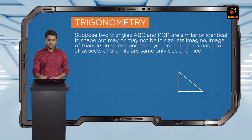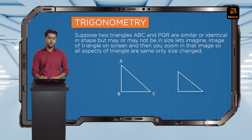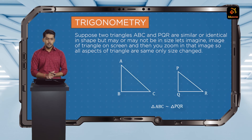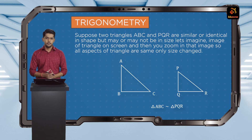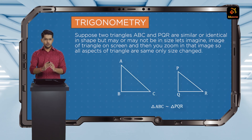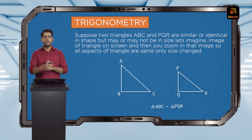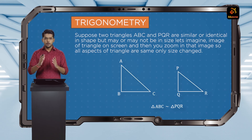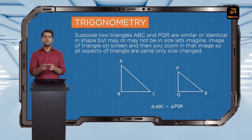Now let's move on to the second important concept — the similarity of triangles. When I say that two triangles, let's say ABC and PQR, are similar, that means they are identical in shape but may or may not be the same in size. To make that into a practical consideration, imagine you have the image of a triangle on a screen and you decide to zoom in — all aspects of the triangle will be enhanced in the same proportion. That larger triangle is basically similar to the smaller one.